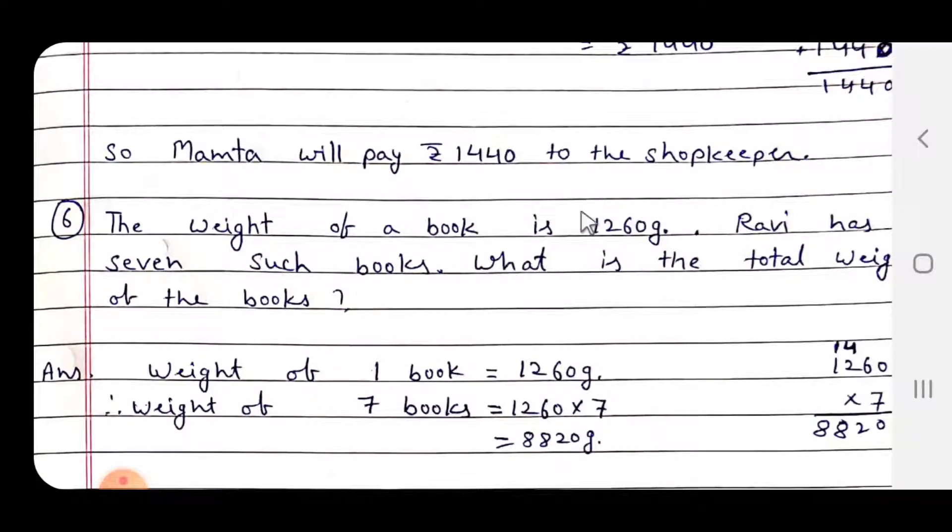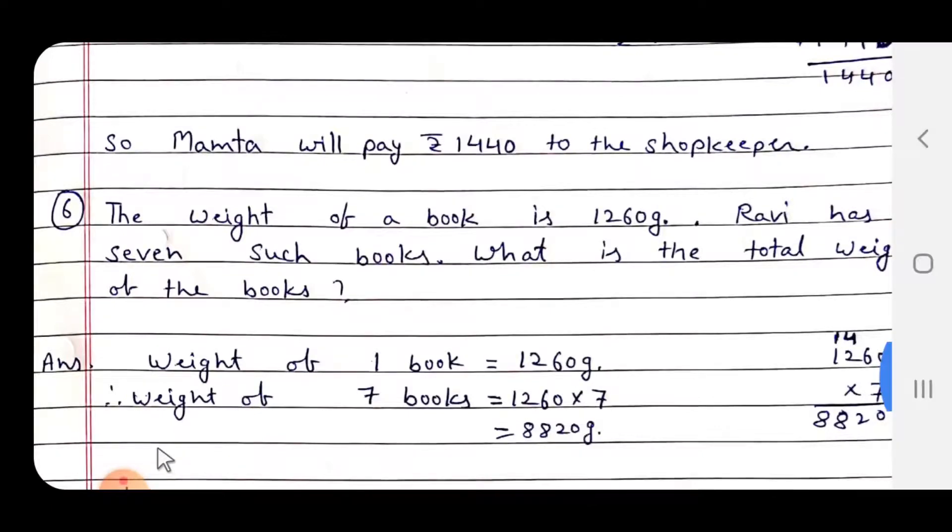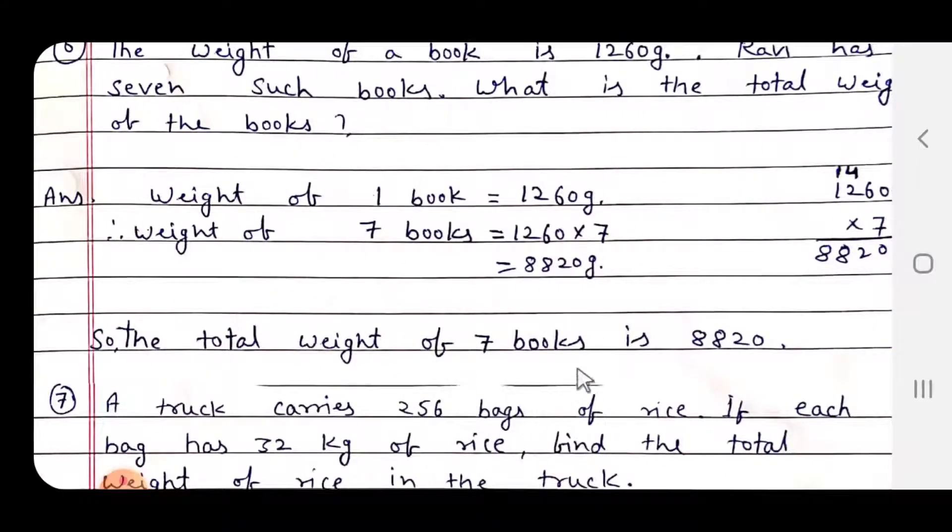Question number 6: The weight of a book is 1260 grams. Ravi has 7 such books. What is the total weight of the books? Weight of one book is 1260 grams. Weight of seven books: 1260 multiplied by 7. 7 x 0 = 0, 6 x 7 = 42, 4 carry over. 7 x 2 = 14 plus 4 = 18, 1 carry over. 7 x 1 = 7 plus 1 = 8.